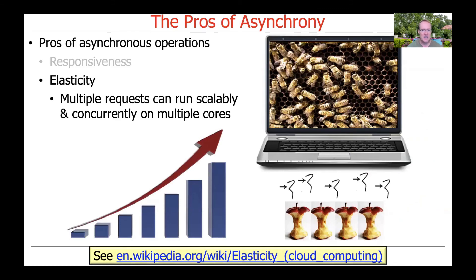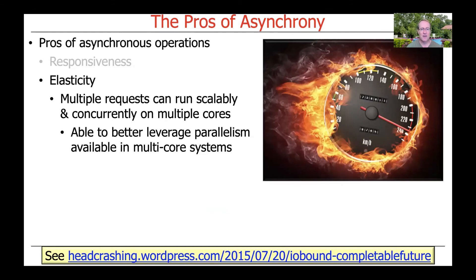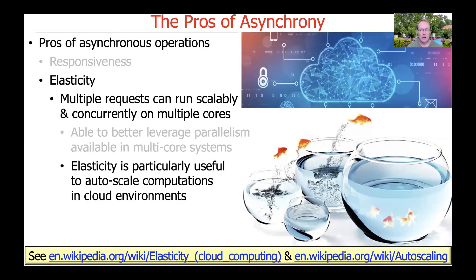Another nice benefit is elasticity, because by decoupling the invocation of something from its computation, we can have computations running in a pool of threads that can be mapped scalably and concurrently onto multiple processing cores — using things like the common fork-join pool, the cached thread pool, or other thread pools in Java. This makes the system more elastic, which in turn allows better use of parallelism available in multi-core systems, and is particularly useful in cloud computing environments.